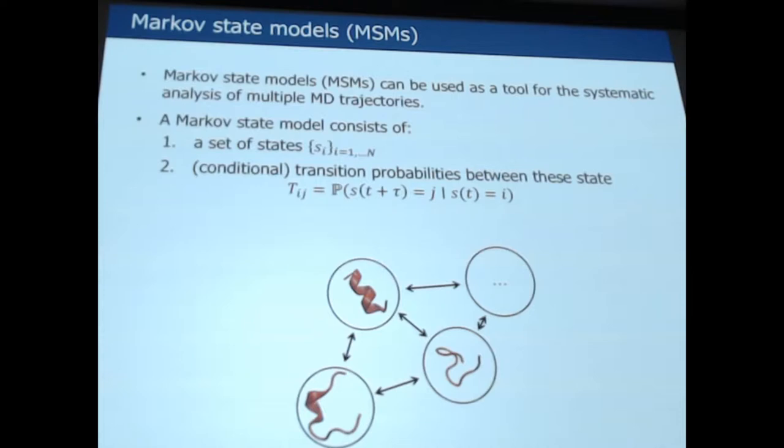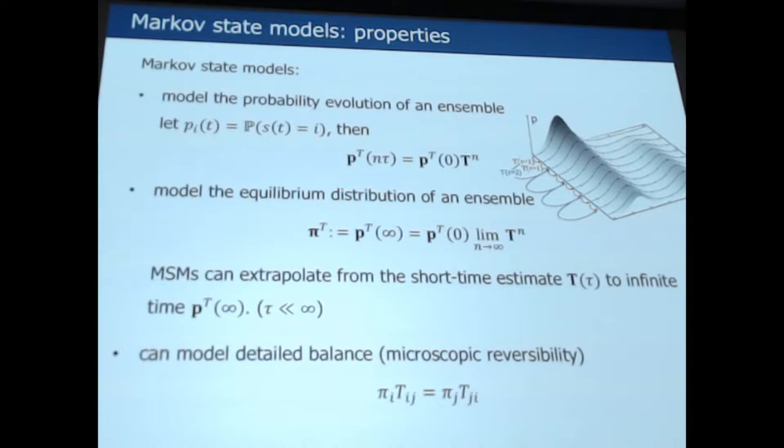Once such a Markov model has been estimated from the data, many properties can be calculated from it. State vector p encodes a probability distribution for an ensemble of walkers. So element p_i(t) is the probability that the system state at time t is i. The future system state at time n times tau can be found by applying the transition matrix n times to an initial distribution p_0. Applying the transition matrix an infinite number of times to the initial distribution, I recover the stationary distribution.